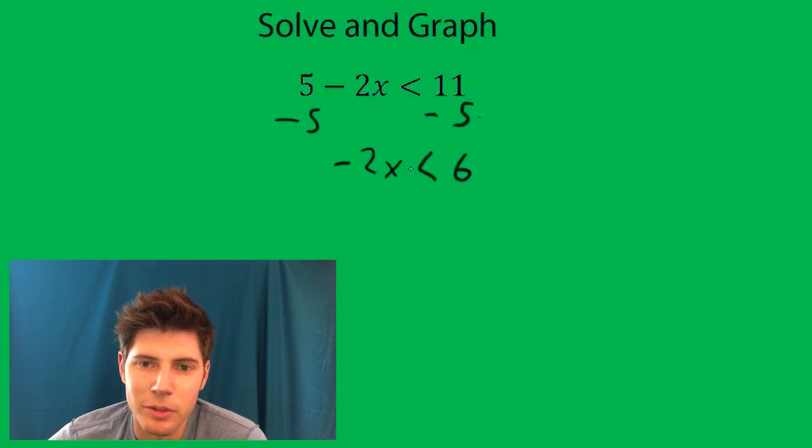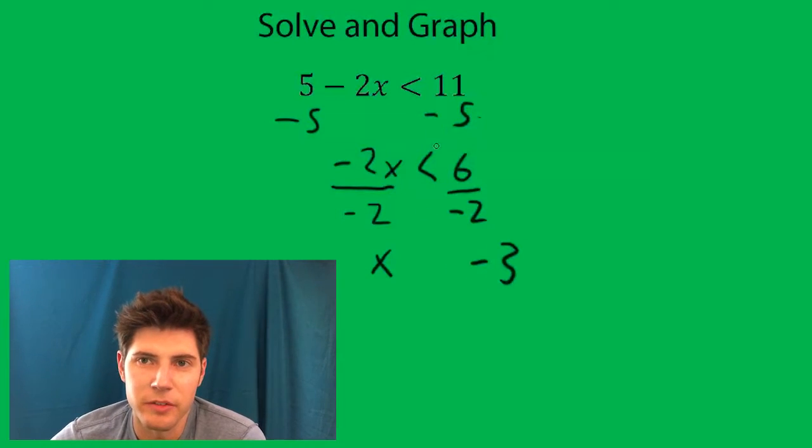And then you're going to divide both sides by negative 2, which gives you x and negative 3. And any time you multiply or divide by a negative number in inequalities, the sign changes.